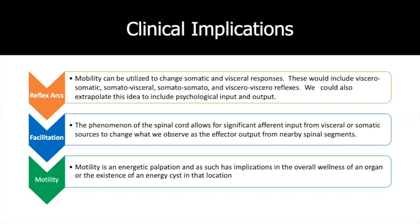I apply them all together. If you have a low back spasm, I may decide to do a cecum or sigmoid mobilization to help that low back spasm. If I feel an energy cyst in the liver, I will treat it purely for the reason that I feel the energy is not moving properly there — I don't know how that will change the rest of the patient's complaint pattern.